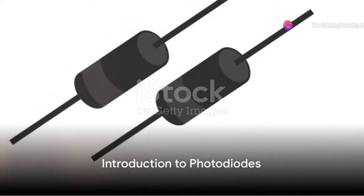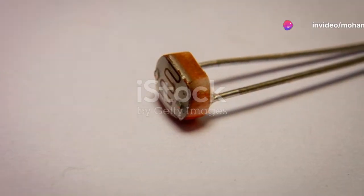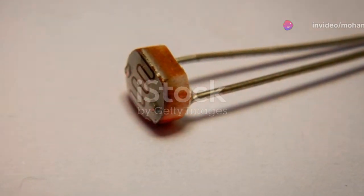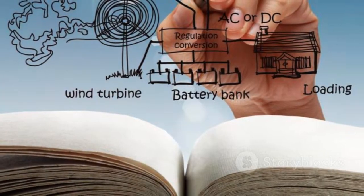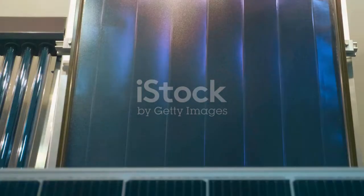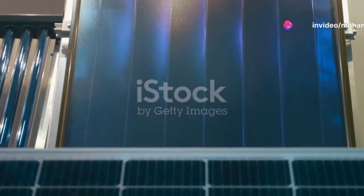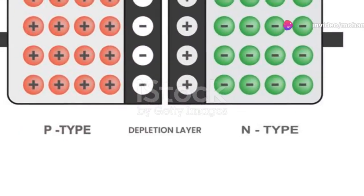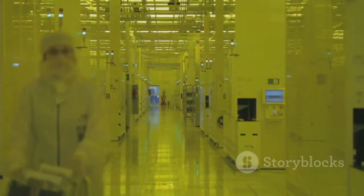Have you ever wondered how a photodiode, a key component in many of our everyday devices, works? Let's dive in. A photodiode is a semiconductor device that masterfully transforms light energy into electrical energy. It's the superhero behind solar cells, absorbing ultraviolet solar rays and turning them into an electrical current. It operates on the principle of reverse bias, a fascinating concept involving a PN junction in semiconductors.